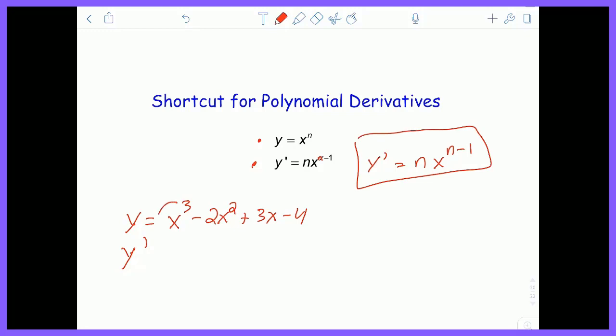So the power comes down, so this will become 3x, and then you reduce the power by one. So 3 minus 1 is 2. The next term, the power comes down and multiplies with the 2, that makes minus 4x, and then reduce the power by one.